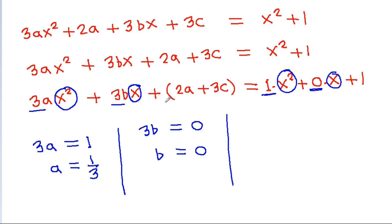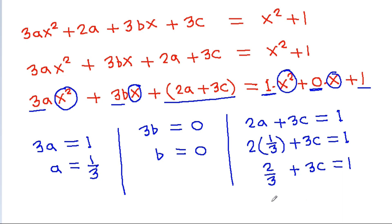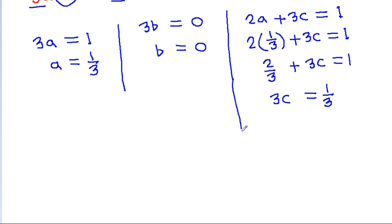And we can compare the constant term. So 2a plus 3c will be equal to 1. And it is 2 times (1/3) plus 3c equals 1. So 2/3 plus 3c equals 1. And 3c equals 1 minus 2/3, which will be 1/3. So c will be equal to 1/9.